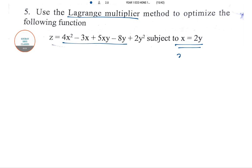So this can be rewritten as x minus 2y equal to 0. So how to write the formation? We can take it as L for Lagrangian. Write the main function.